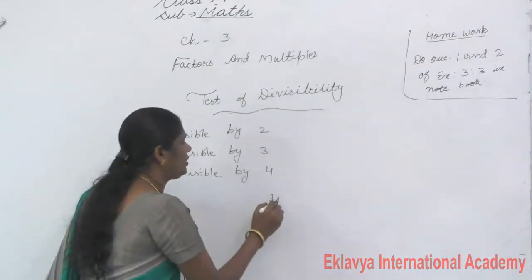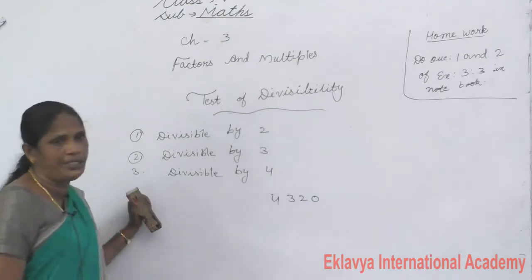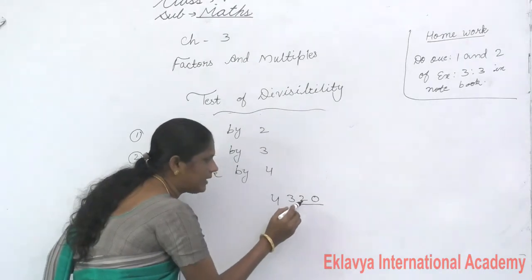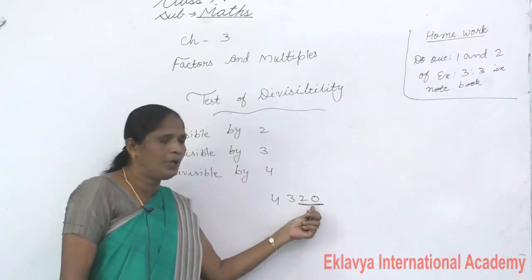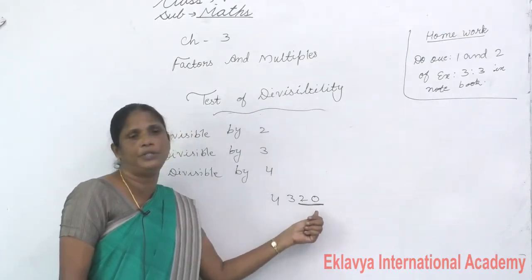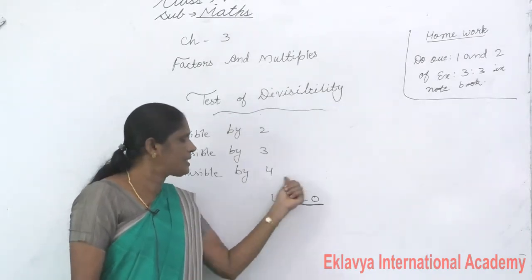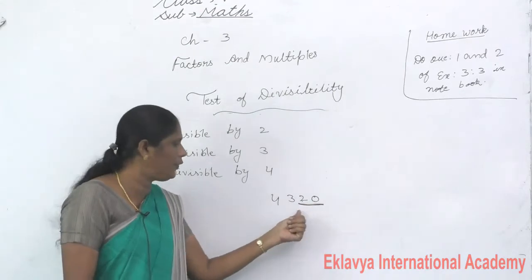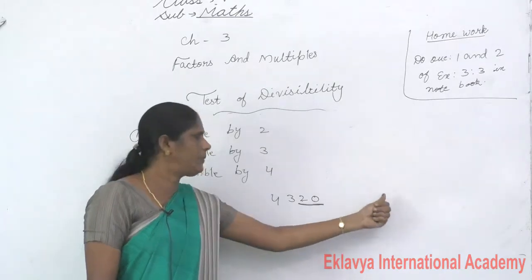For example, 4320. The last 2 digits are 20. Is 20 a multiple of 4? Yes — 4 × 5 = 20. Therefore 4320 is divisible by 4.